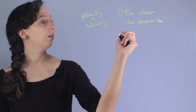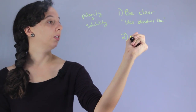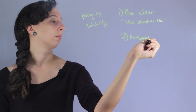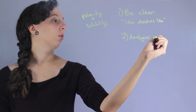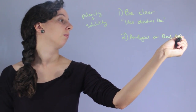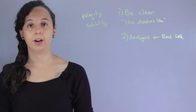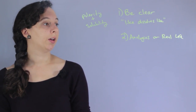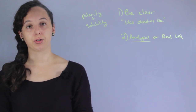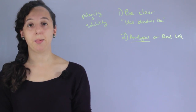The second thing that I always like to do is use either analogies or real life experience. And so if we're talking about polarity and solubility, an analogy to think about why some things are drawn to each other and some things aren't might be thinking about magnets.